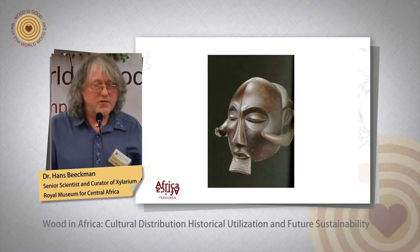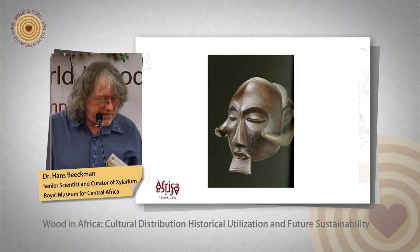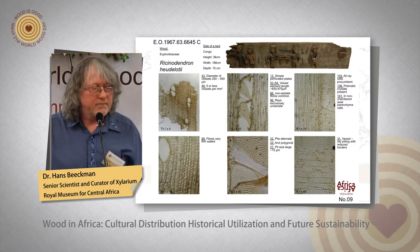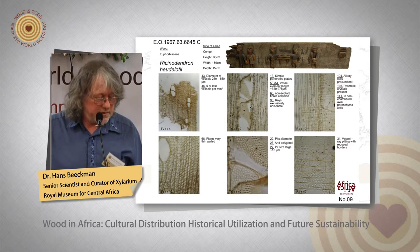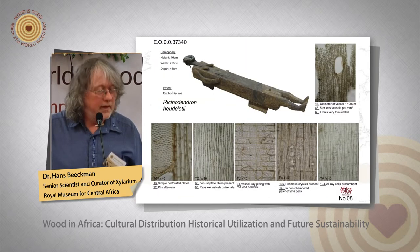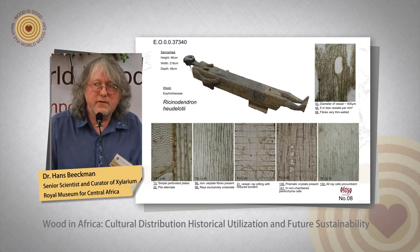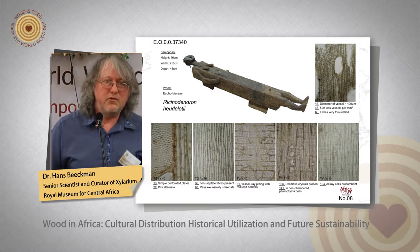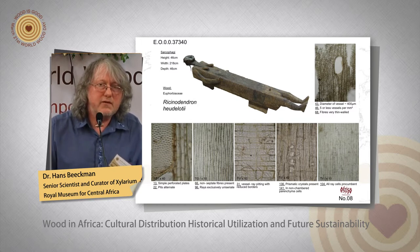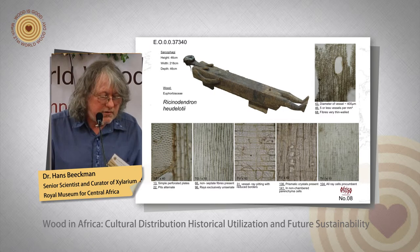More Ricinodendron furniture: there is the side board of a bed, and a coffin also in Ricinodendron. When you need big objects, take a Ricinodendron — it's easy to cut as a big tree and easy to sculpt.